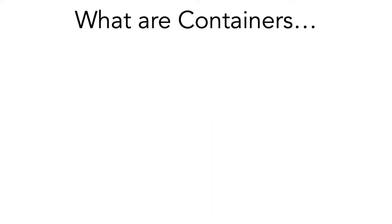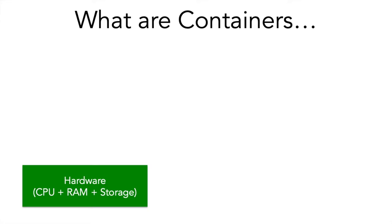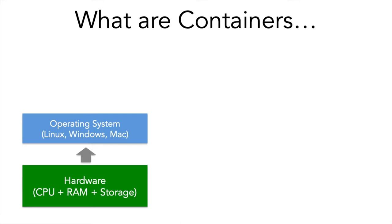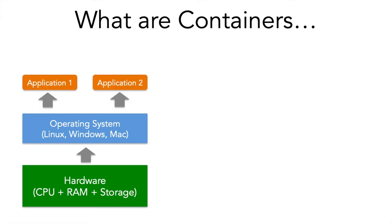Let's look at how containers evolved. In the legacy days, applications used to be hosted differently. We had hardware — basically CPU, RAM, storage, network, firewall, etc. Then we installed an operating system on top of the hardware like Linux, Windows, or Mac. And then we hosted our applications on that operating system. You could host multiple applications on the same operating system, though it was typically not suggested. So basically this is a server environment — you install an operating system on your server and then host your application on top. Single server to single application or multiple applications.